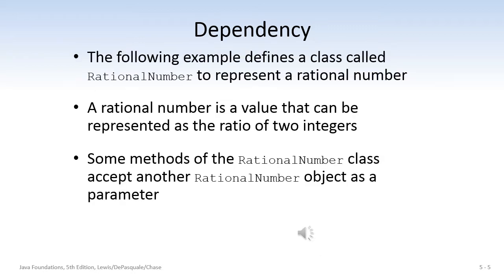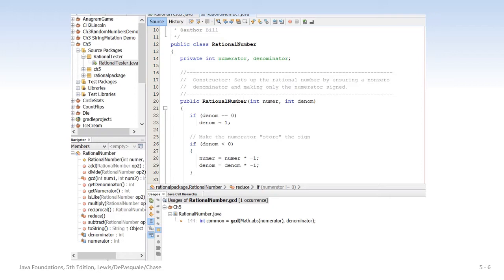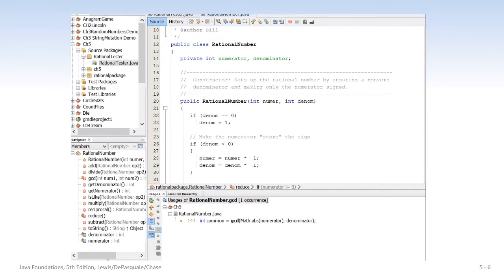Next, we're going to look at an example that defines a class called rational number to represent a rational number. A rational number is a value that can be represented as the ratio of two integers. Some methods of the rational number class accept another rational number object as a parameter.